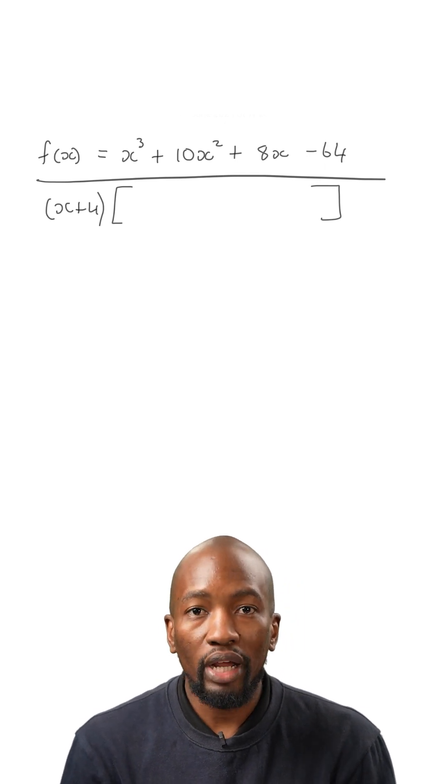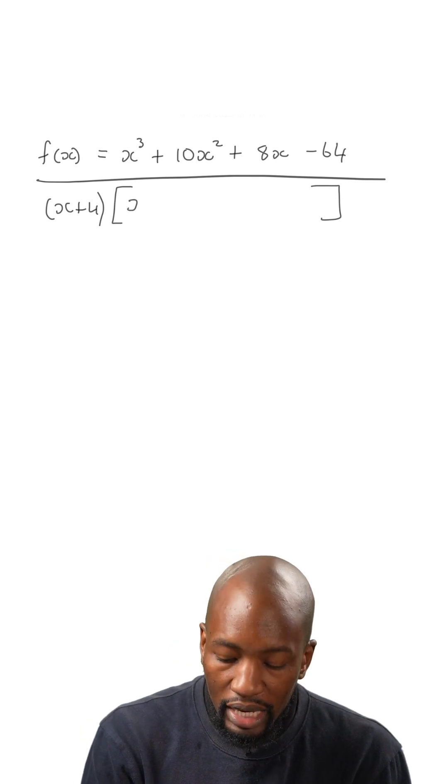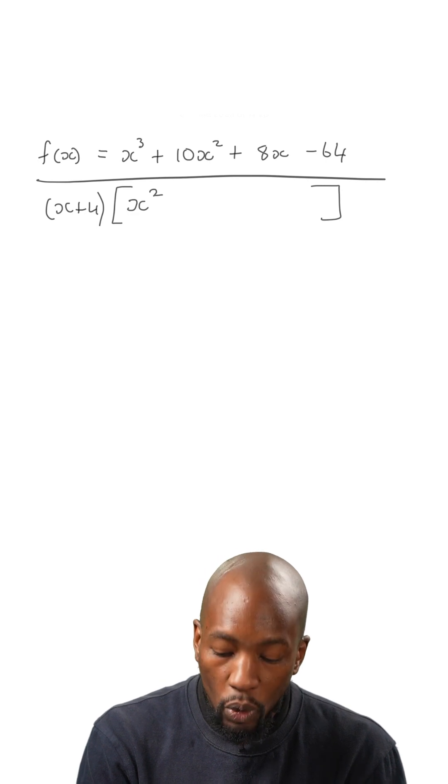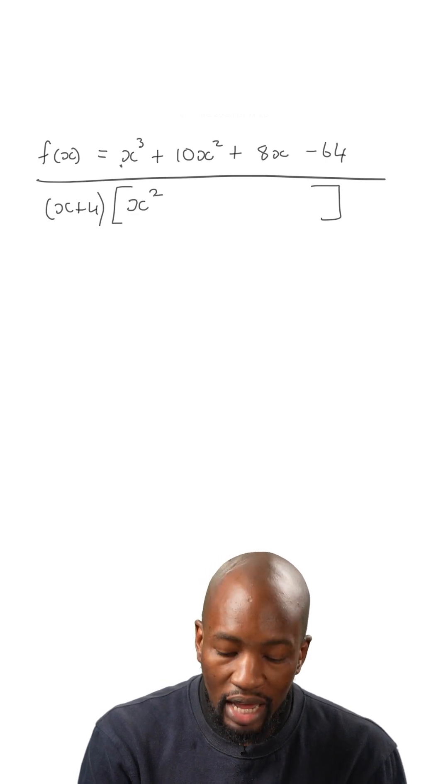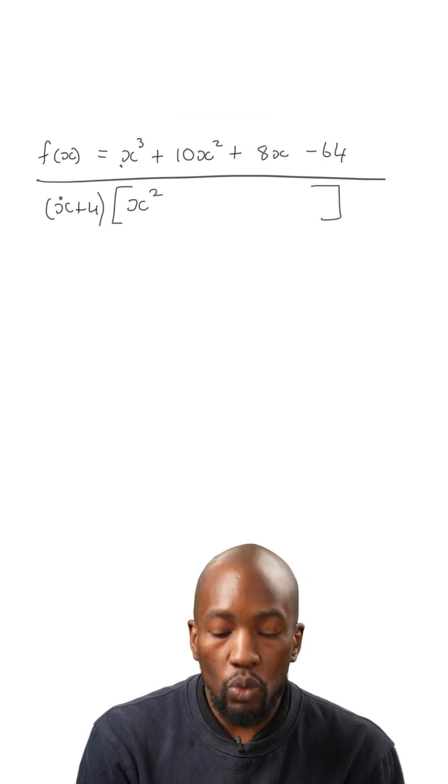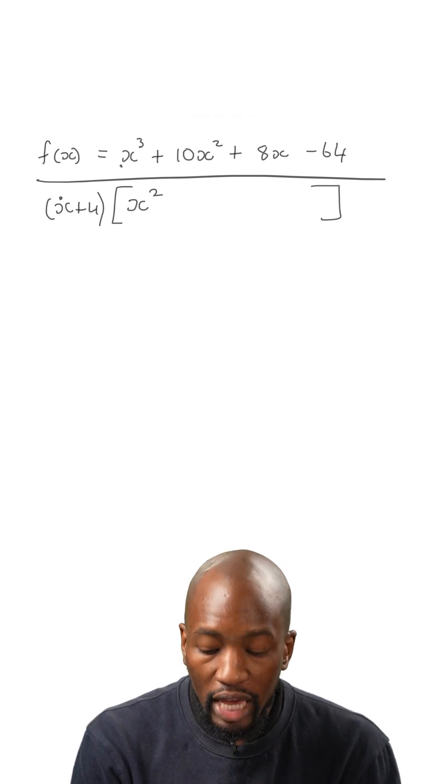Now in the block brackets, the first term that we have is going to be x squared. How did I find x squared? What we did is, we divided x to the power of 3 by the first term in our round bracket. So x cubed divided by x gives you x squared.